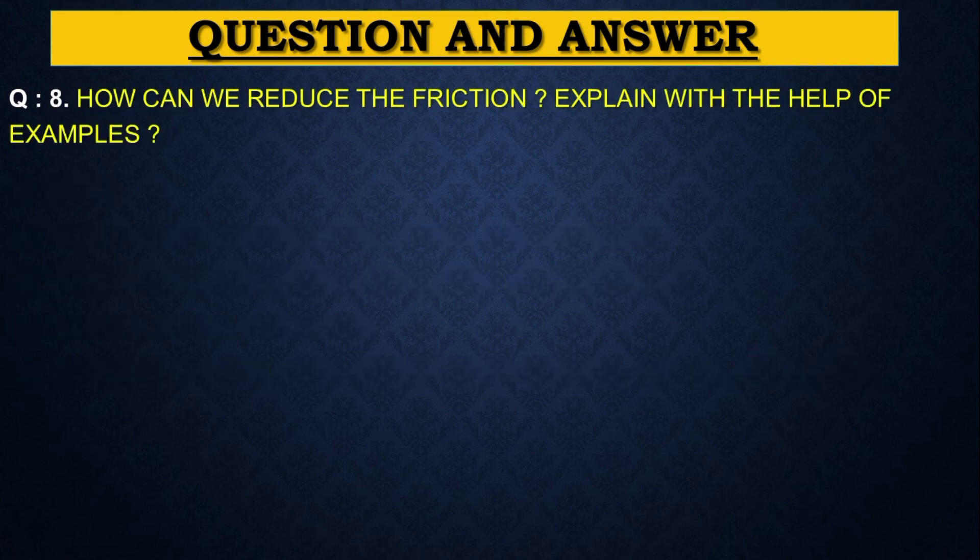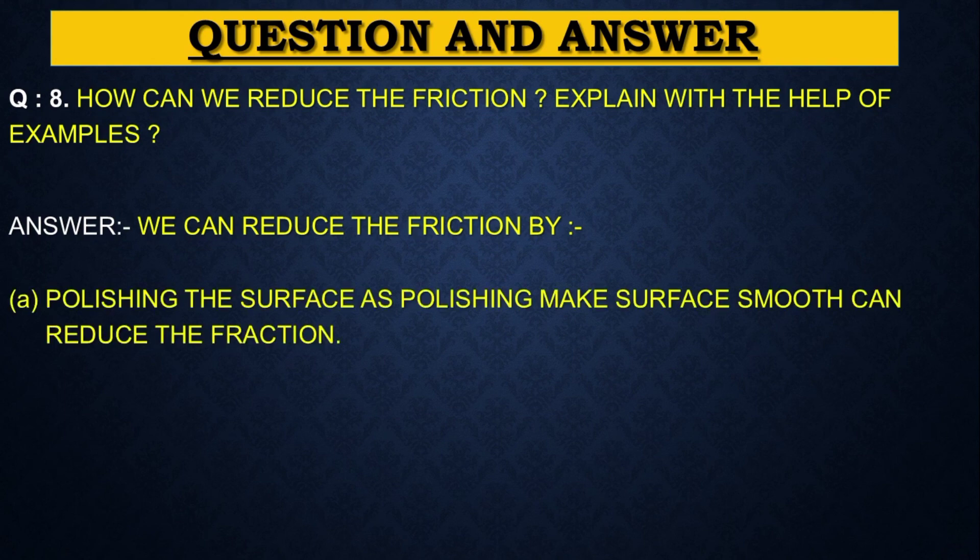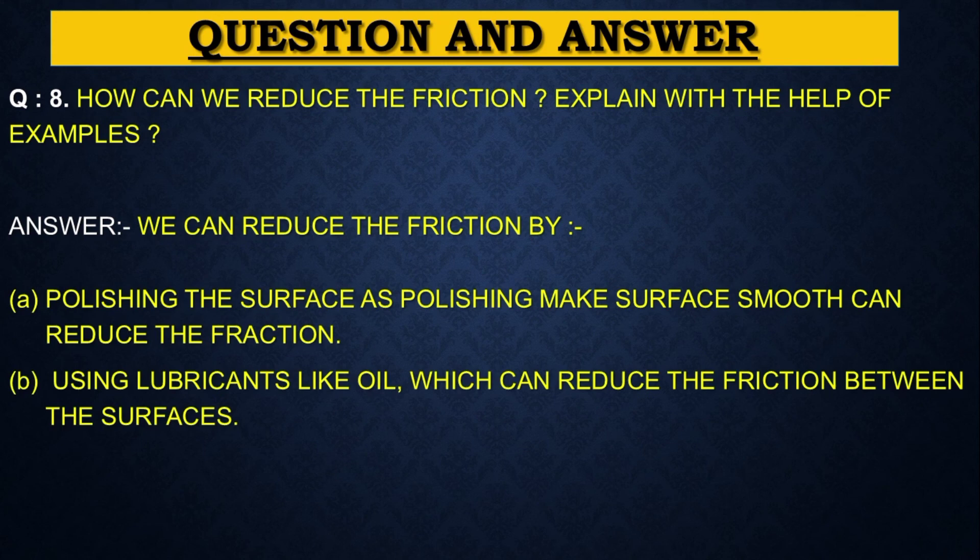Next question. How can we reduce the friction? Explain with the help of examples. Answer is we can reduce the friction by A: Polishing the surface, as polishing makes surface smooth and reduces the friction. B: Using lubricants like oil which can reduce the friction between the surfaces.